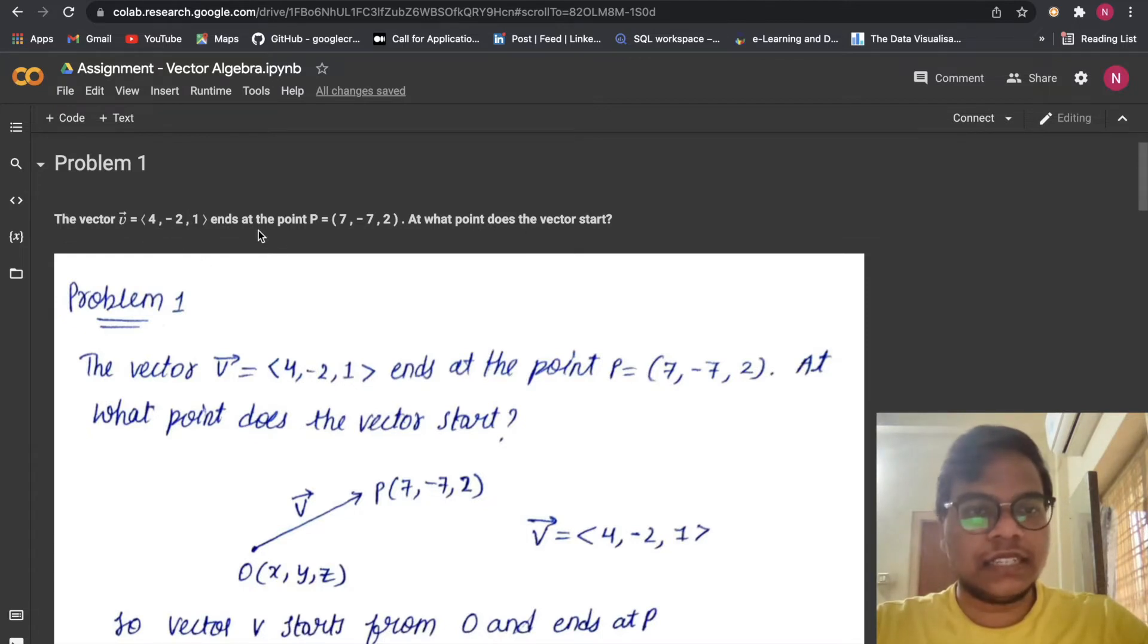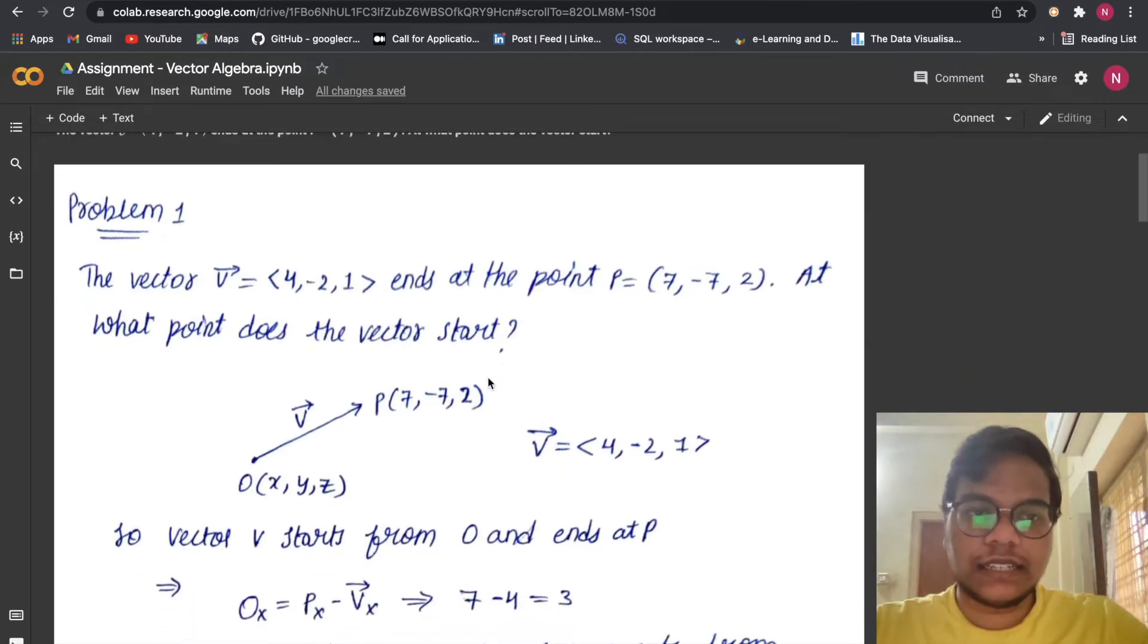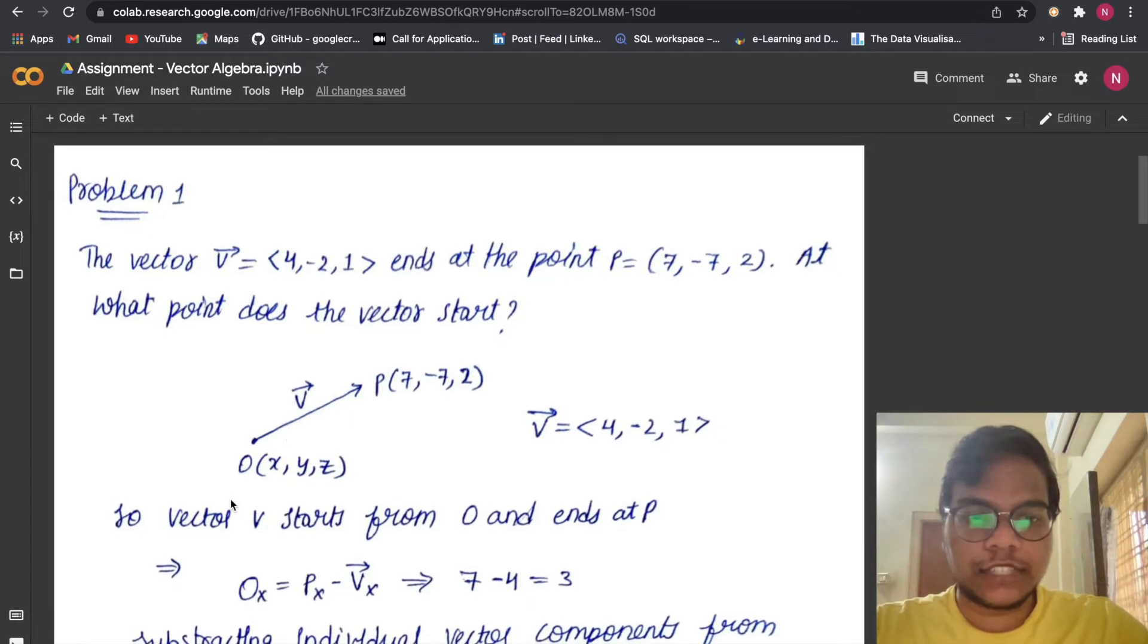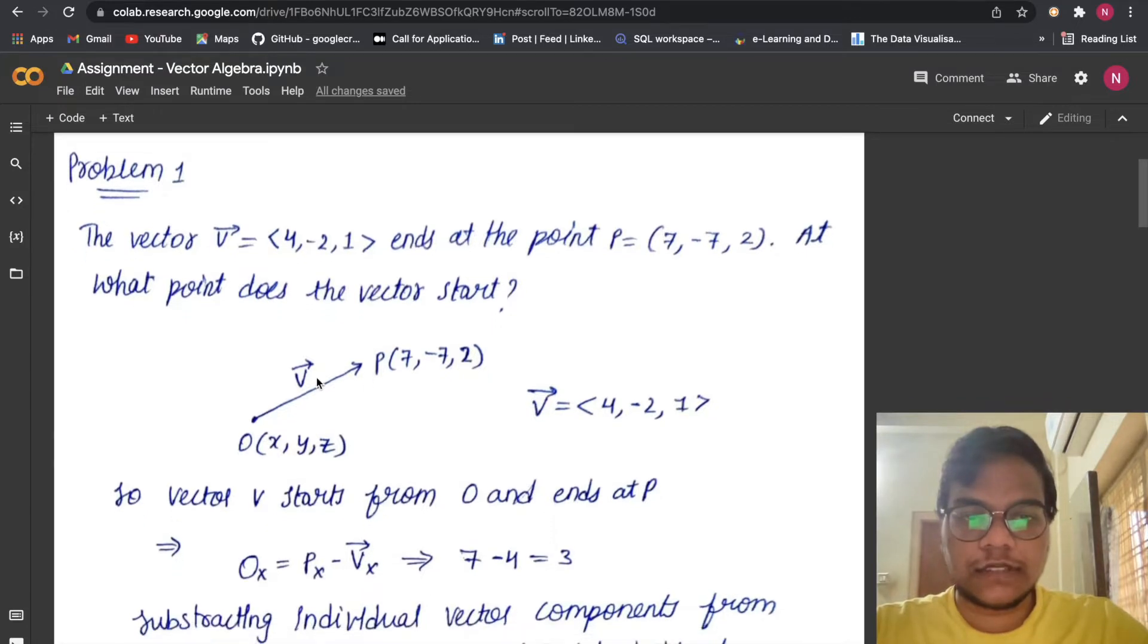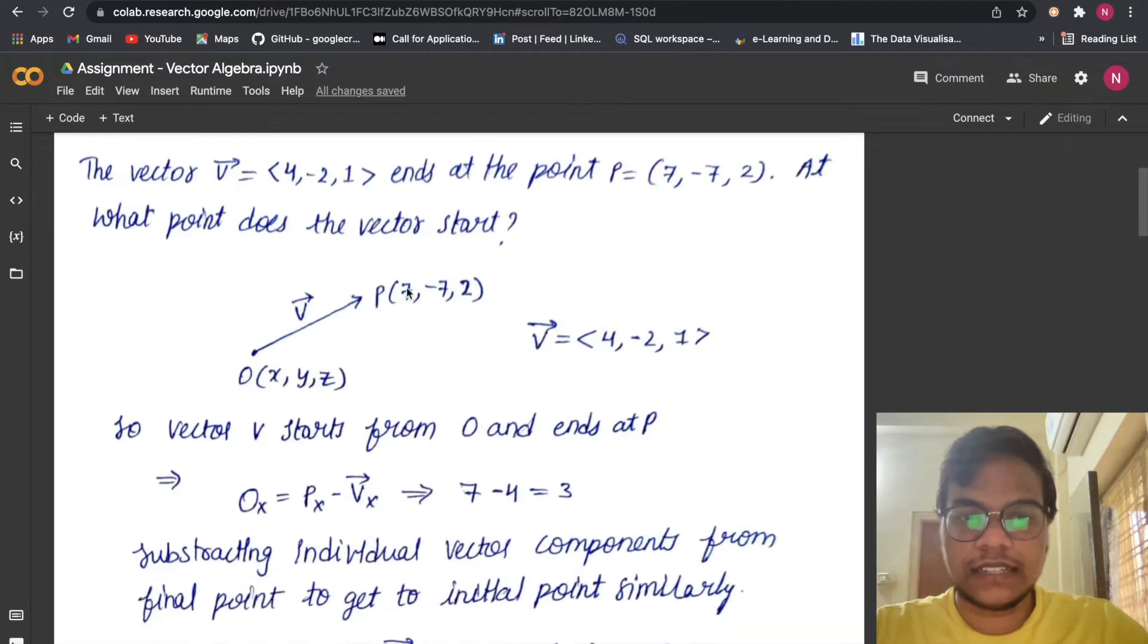...hence at the point P(7, -7, 2), at what point does the vector start? So we have to find the point where vector v starts. I'm assuming it starts at O, so I'm giving the point as (x, y, z). Vector means it has magnitude as well as direction, right? So vector v starts from...